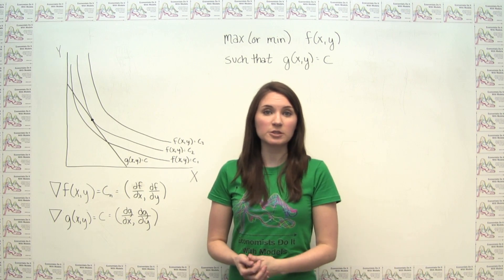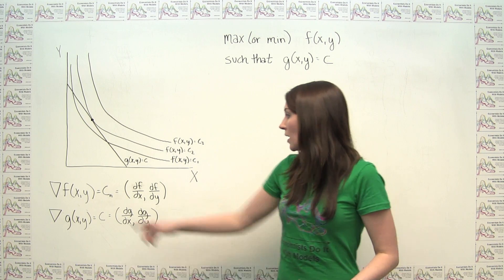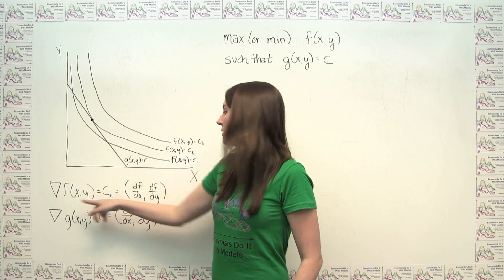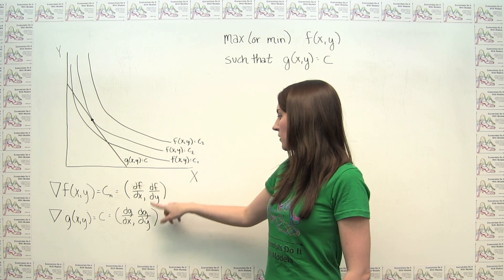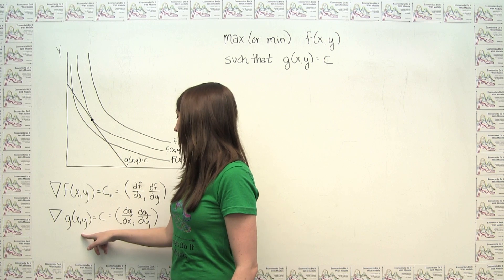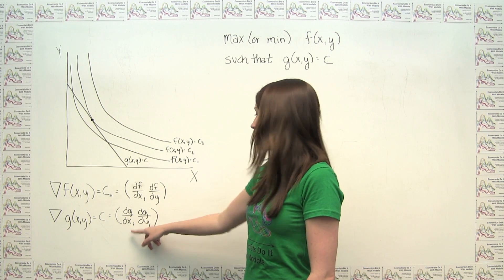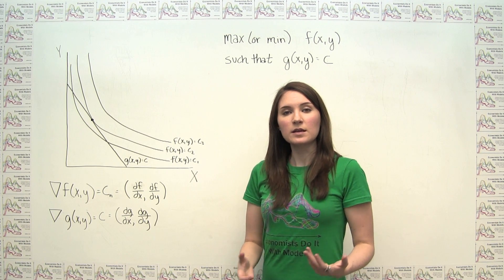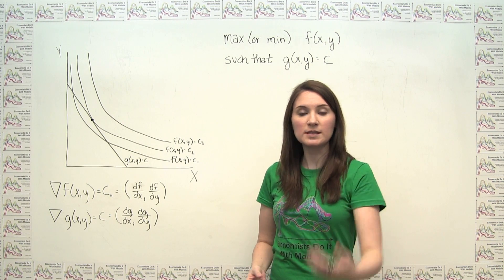In contrast, the gradient of a function gives the direction of maximum increase in the value of that function. The gradient of f(x, y) is the vector (∂f/∂x, ∂f/∂y), and the gradient of g(x, y) is the vector (∂g/∂x, ∂g/∂y). Mathematically, the gradient represents the direction of maximum increase in the value of that function.